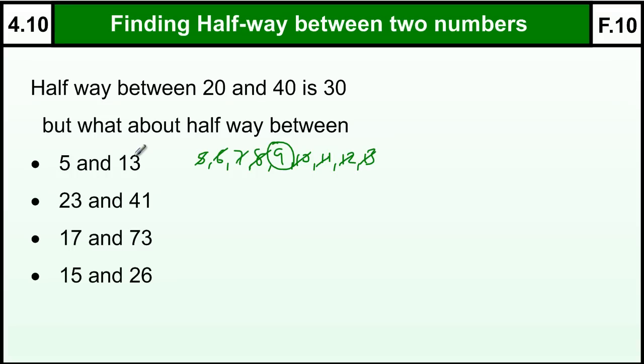And that is essentially find the average of the two numbers. So if I do 5 plus 13, and that's 18, and I divide that answer by 2, so I find halfway, that gives me 9. And that will always work to find out halfway between two numbers.